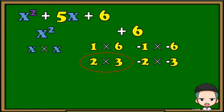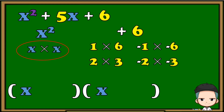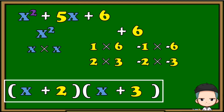Next step, we're going to prepare these parentheses, and then copy the factors of the first term and the factors of positive 6 that if we add, the result is positive 5. As you notice, we use the addition operation since the sign of 2 and 3 are both positive. The factors of x squared plus 5x plus 6 is the quantity of x plus 2 multiplied to the quantity of x plus 3.